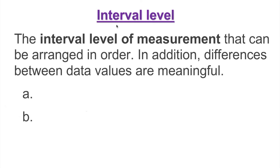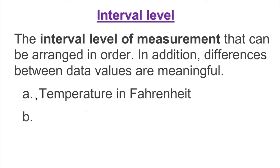The interval level of measurement can be arranged in order, and in addition the differences between data values are meaningful. For example, temperature in Fahrenheit: if I have 80 degrees and 90 degrees, I can order them smallest to largest, and the difference is 10 degrees — that's meaningful. If I go to 100 degrees, the difference is again 10 degrees, which is meaningful.